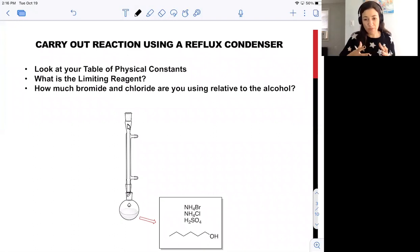In order to be very prepared to set up your reaction, go ahead and fill in the table of physical constants that you'll find in the lab manual as part of your pre-lab reading. You'll determine the number of moles of the ammonium bromide, ammonium chloride, and one hexanol that you're using. This will allow you to identify the limiting reagent and think about how much bromide and chloride you're using relative to the alcohol. We'll verify these numbers and discuss why we choose this stoichiometry at the start of lab.